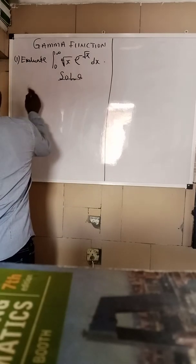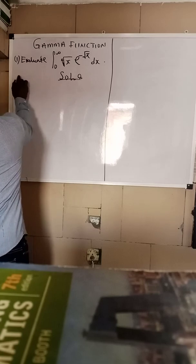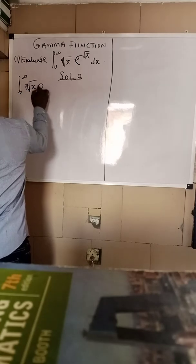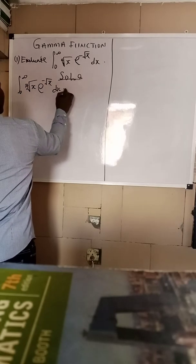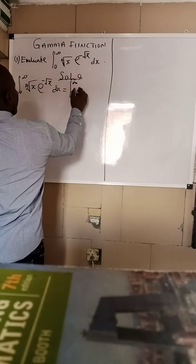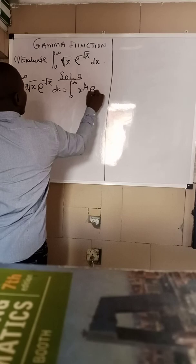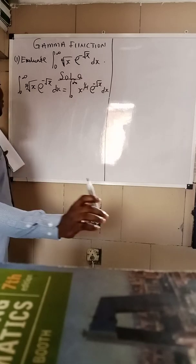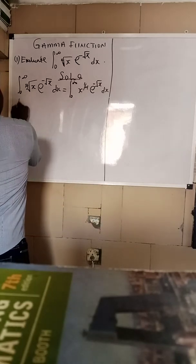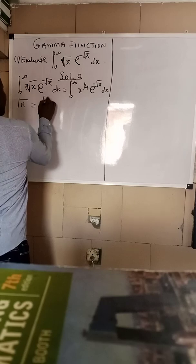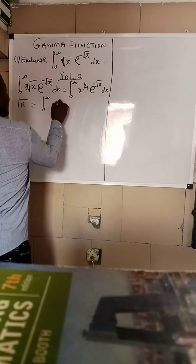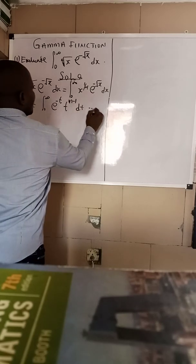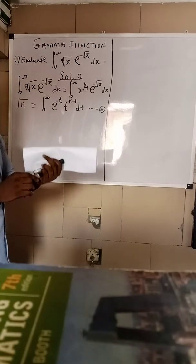What we have is that the integral from zero to infinity of the fourth root of x times exponential minus root x dx can be written as integral from zero to infinity of x raised to the power one over four times exponential minus root x dx. From the general definition of the gamma function, we have that gamma(n) equals integral from zero to infinity of exponential minus t times t raised to the power n minus one dt. You can label this equation one-star for remembrance.